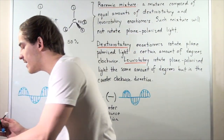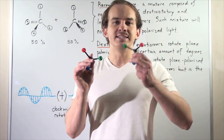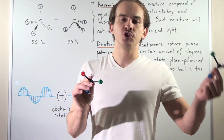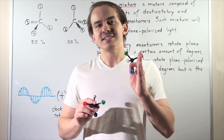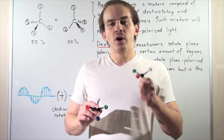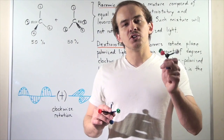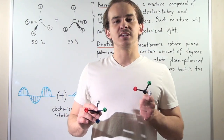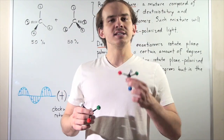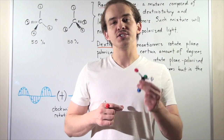Now let's suppose I take the mirror image of this enantiomer. I have a second enantiomer and I place this mirror image into container 2, then shine that same plane polarized light onto container 2. The plane polarized light will be rotated the same amount of degrees but in the opposite direction. So if this rotates it in the clockwise direction, this enantiomer will rotate it in the counterclockwise direction.